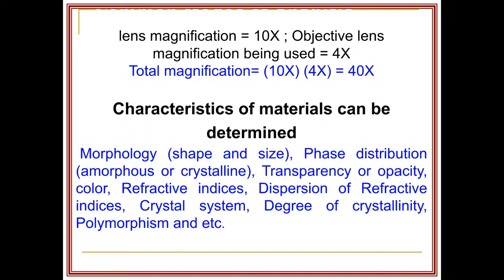This is the general working principle of the optical microscope. The different characteristics of a material we can determine by optical microscope include: morphology, phase distribution, whether amorphous or crystalline, transparency, refractive indices, dispersion of refractive indices, crystal system, degree of refractive indices, and polymorphism.